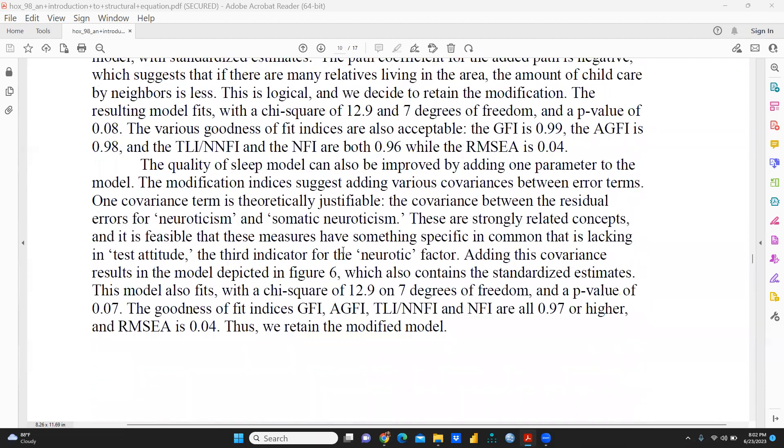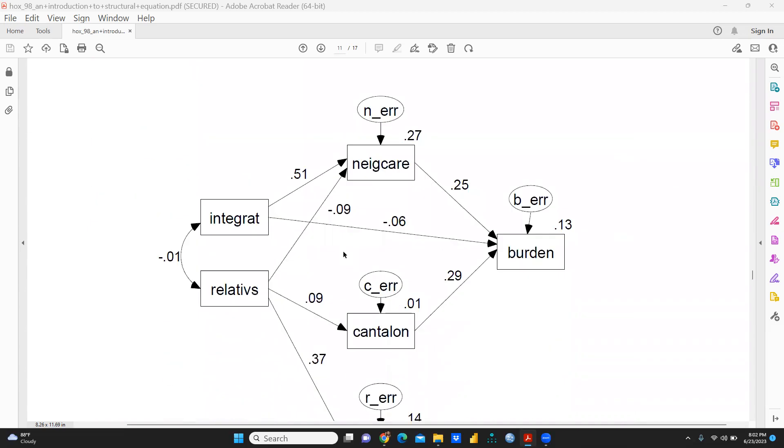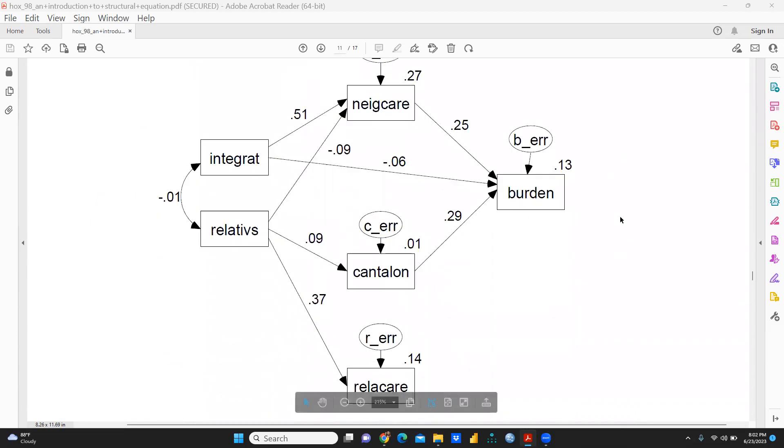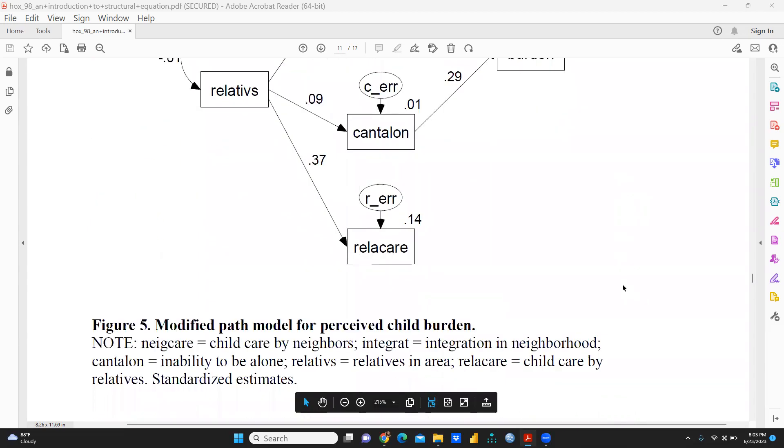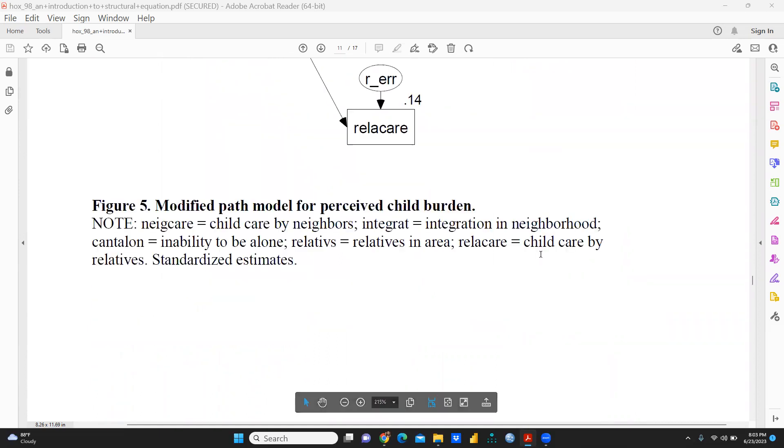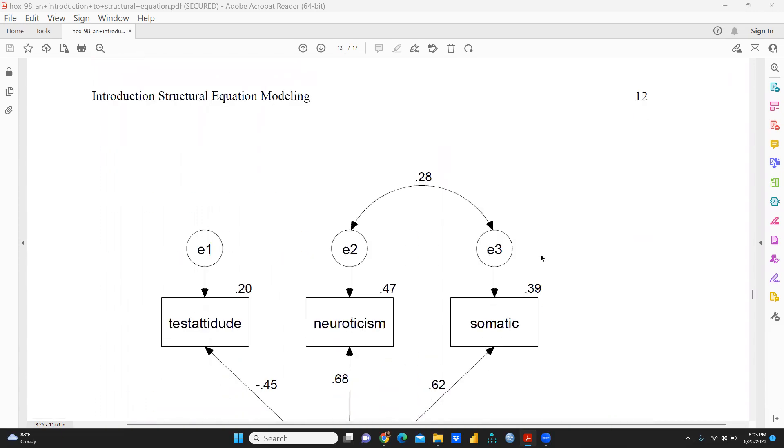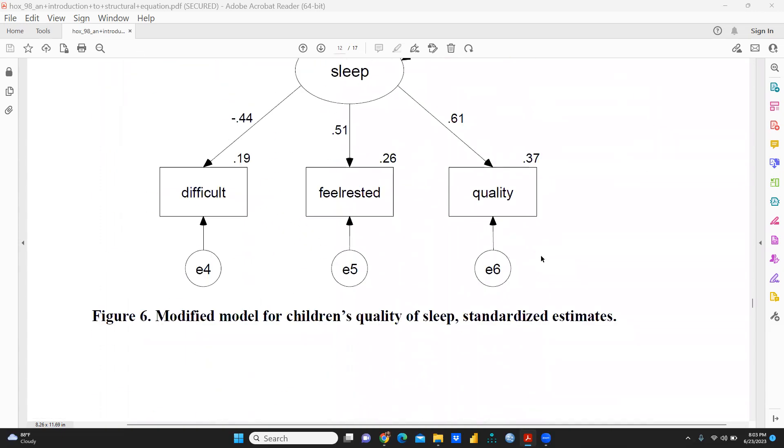Modification indices you can see, and further, we can go through what you mean by TLI and NNFI and RMSEA. Each and everything is given in this particular paper. And now this is the elaboration of this particular path model for perceived—this problem statement the author has taken.